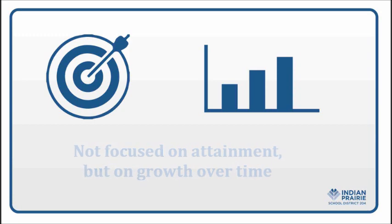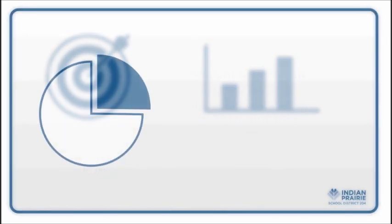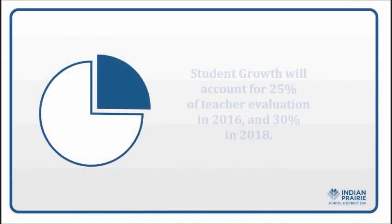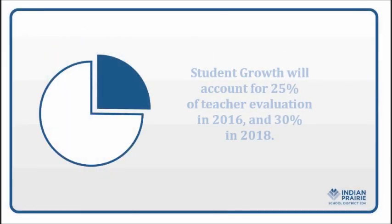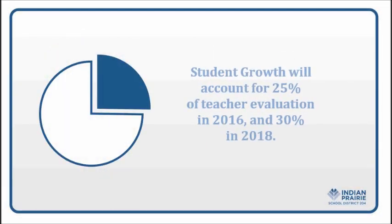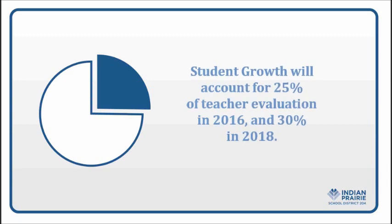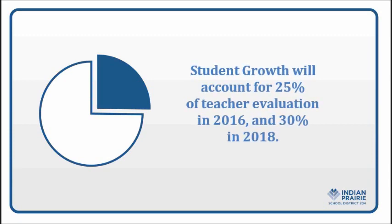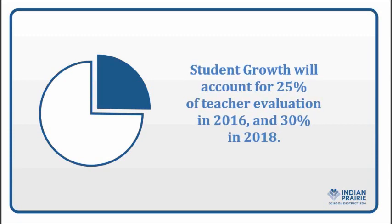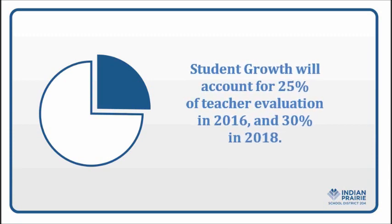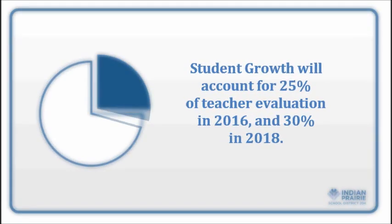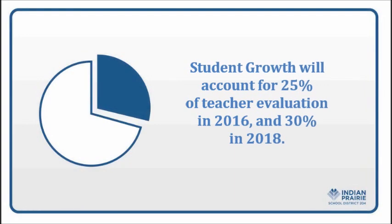The law takes effect beginning in the fall of 2016. At that time, 25% of a teacher's evaluation will be based on student growth. That grows to 30% in 2018.